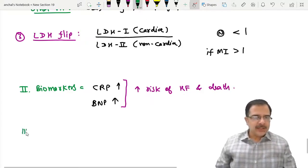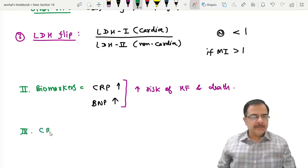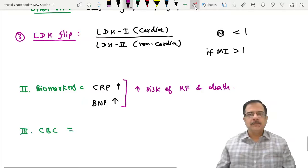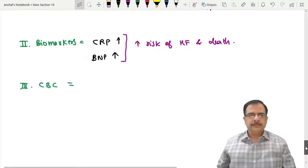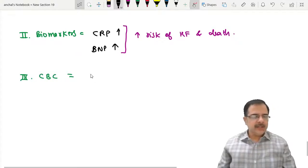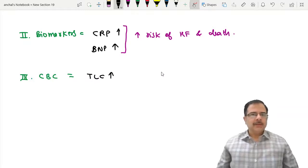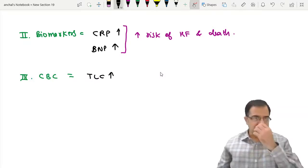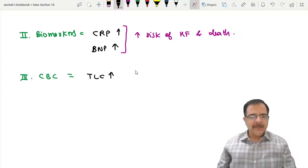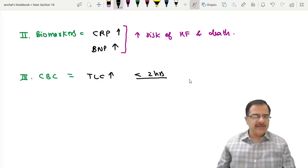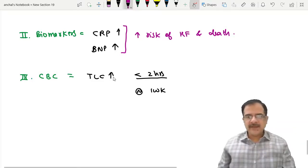The other test is CBC. In CBC, there will be raised TLC, again an inflammatory process. TLC is elevated within two hours and normalizes in one week, even without infection. If TLC is high, more the count, it is associated with poor prognosis.